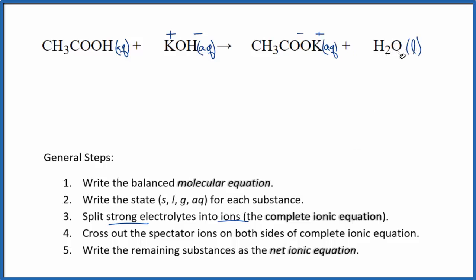So now we'll split the strong electrolytes. CH3COOH, that's not a strong electrolyte, so we're going to leave it together with AQ after it. Plus K plus, that's our potassium ion, that's aqueous. And then the hydroxide, also dissolved in water. These are the reactants.